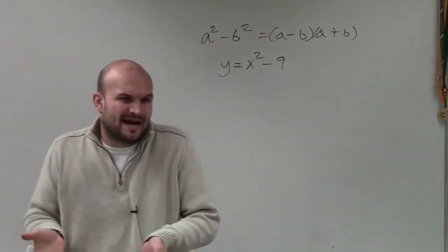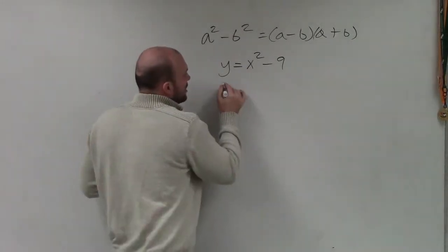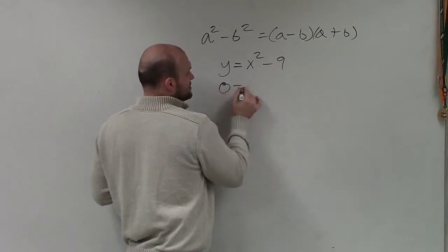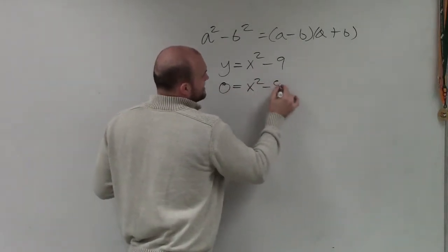Alright, so the first thing we're solving, obviously, we want to make sure we're going to set our dependent variable equal to 0, so therefore I have x squared minus 9.